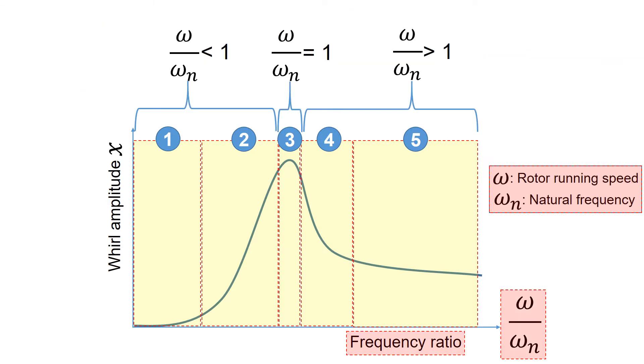The x-axis of this plot is the frequency ratio which the rotor running speed divided by the system natural frequency. So when the frequency ratio equals to 1, it means that the rotor running speed coincide with the natural frequency. And at this condition, the rotor response is the highest.